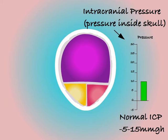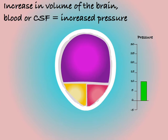However, if something happens that causes one of the three components — the brain, the CSF, or the blood — to increase in volume, then pressure inside the skull will start to increase. This is essentially what the Munro-Kelly hypothesis is: a tool to examine changes in pressure inside the skull.